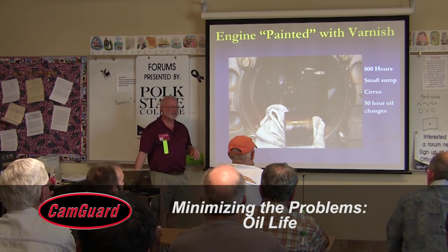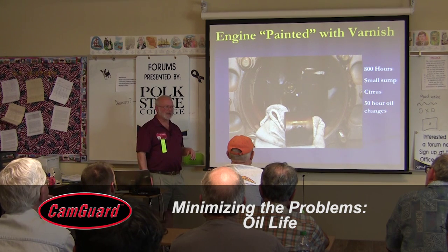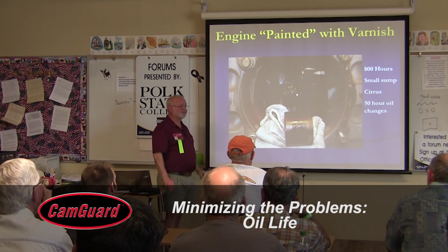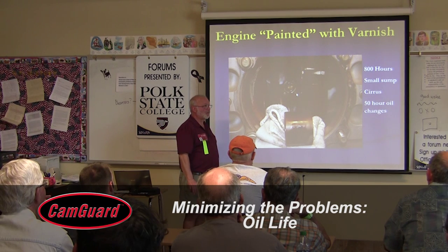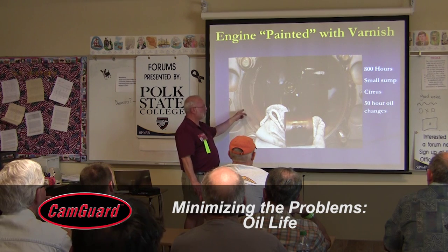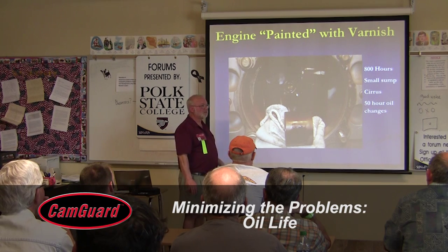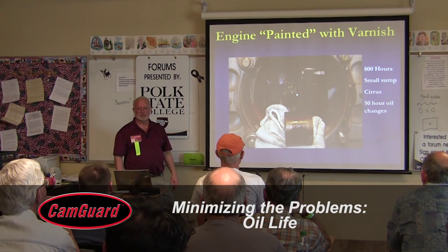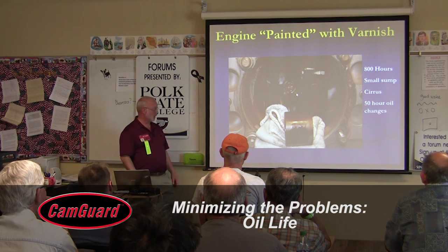The oil capacity on the dipstick says 8 quarts, but most people run it down to 6 to keep oil out of the air. The engine runs very cool — this is an older Cirrus. So what would be recommended here? More frequent oil changes, and certainly using CamGuard.